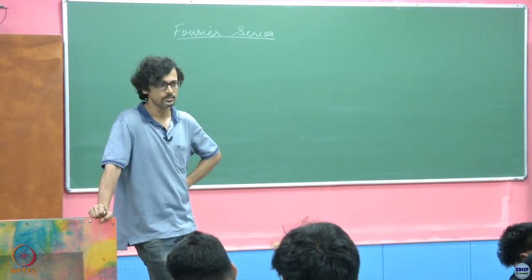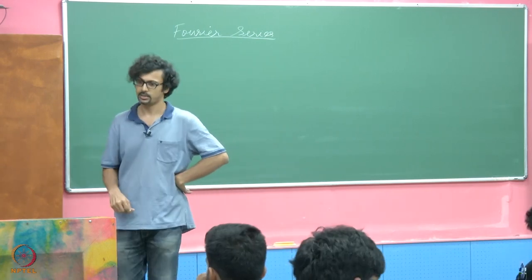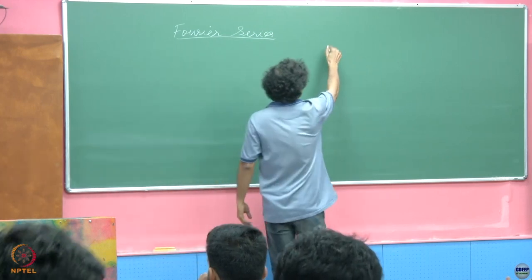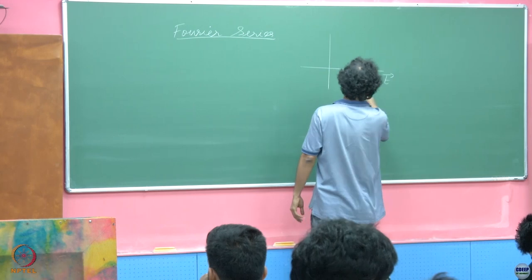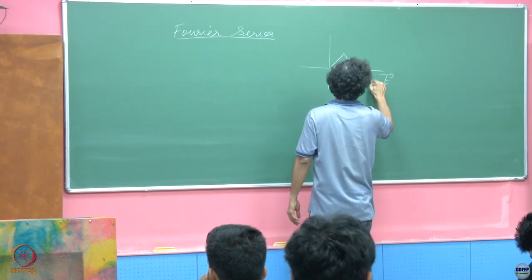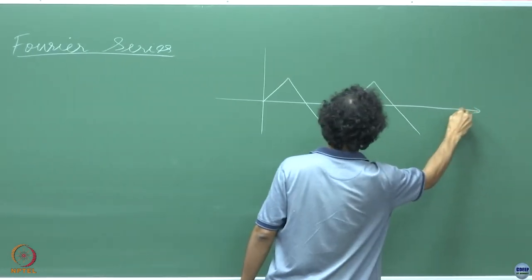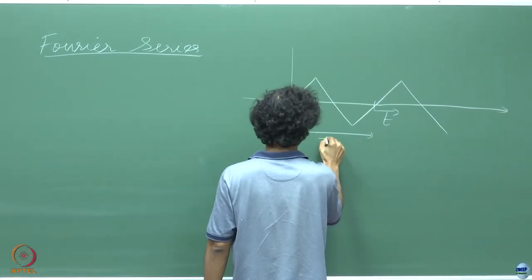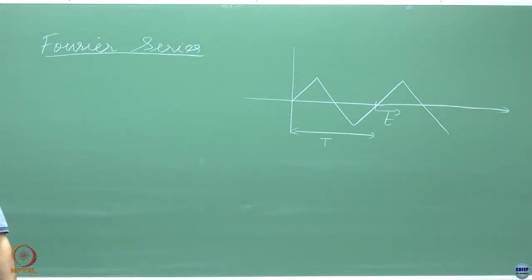Periodic waveforms, right? So what does this Fourier series do? What do you think it is? If I have a signal like so, what does the Fourier series allow me to do?